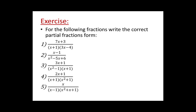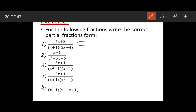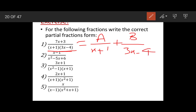Now some examples: for the following fractions, write down the correct partial fraction form. For example one, check the denominator — the factors are linear and different. So the partial fraction will be A upon x plus 1 plus B upon 3x minus 4. This is case 1: linear non-repeated factors.